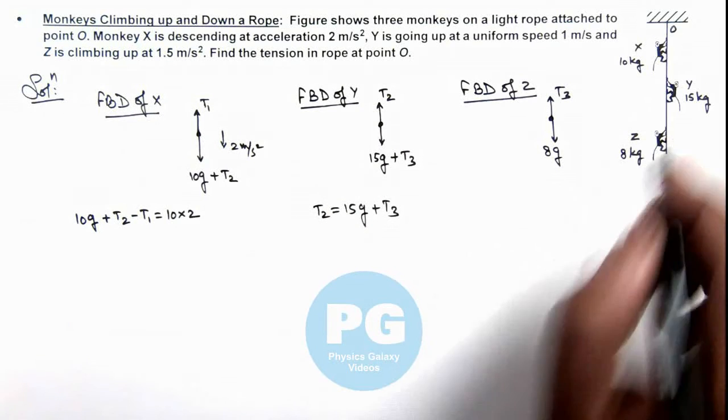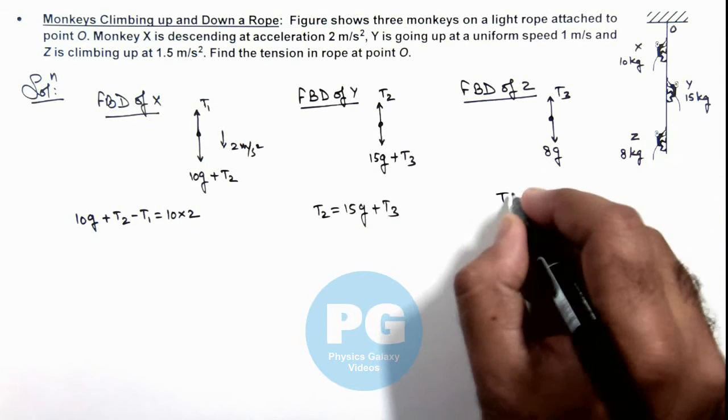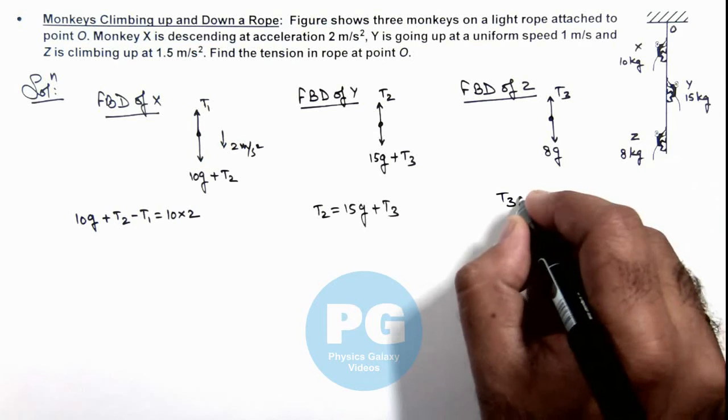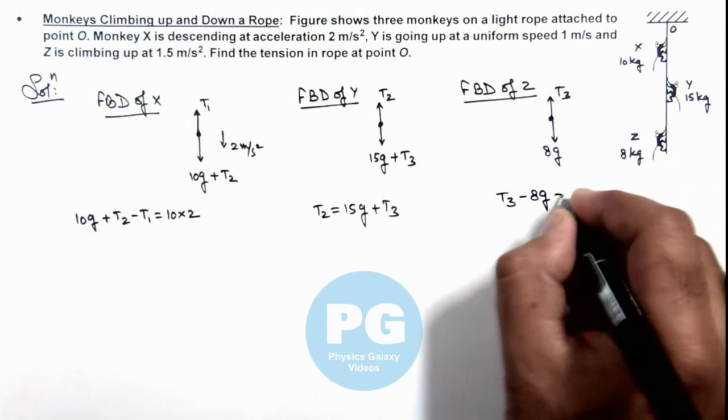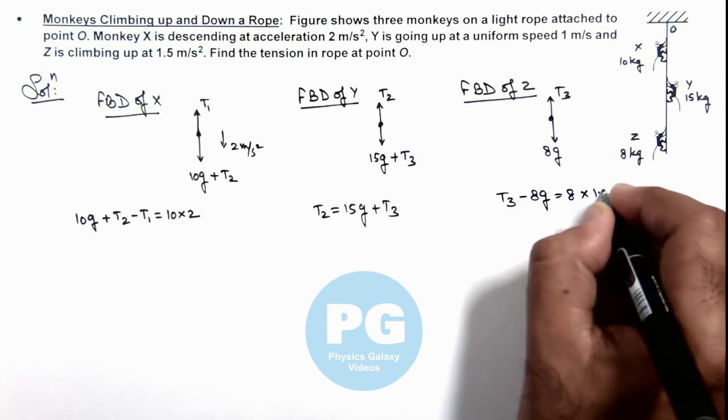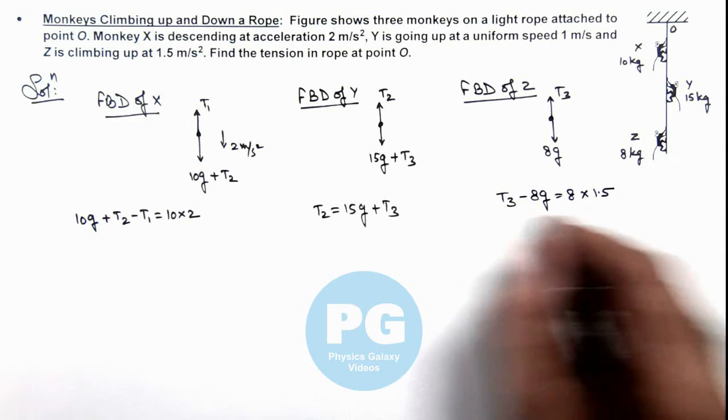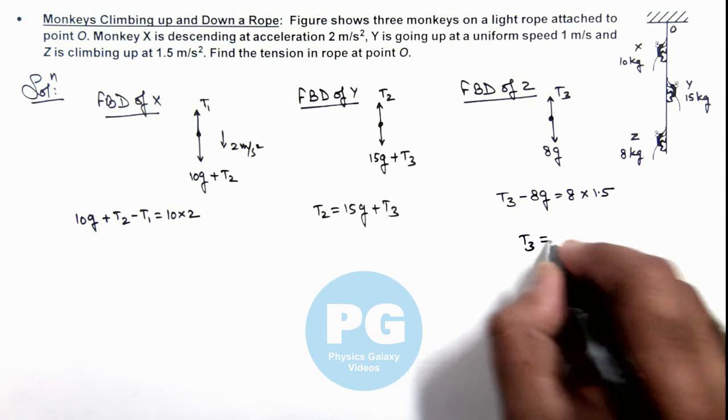We are given that monkey Z is climbing up at 1.5 meters per second squared, so here the equation will be T3 minus 8g equals 8 multiplied by 1.5.